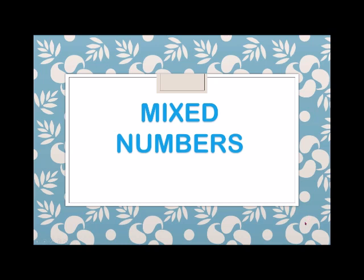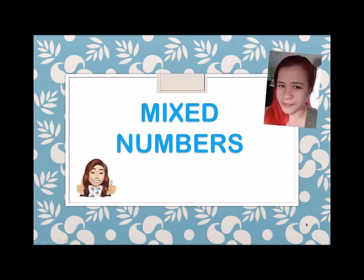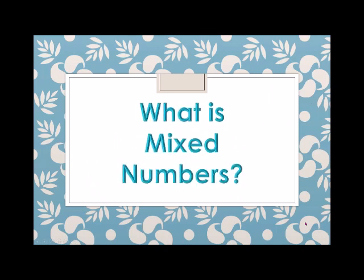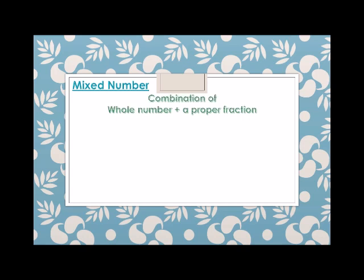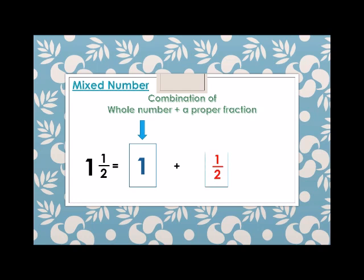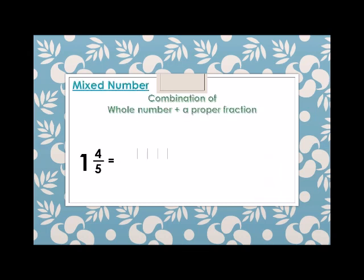Our topic for today is mixed numbers. What are mixed numbers? Mixed numbers are a combination of a whole number plus a proper fraction. For example, one and one half — one is the whole number, plus one half is the proper fraction.